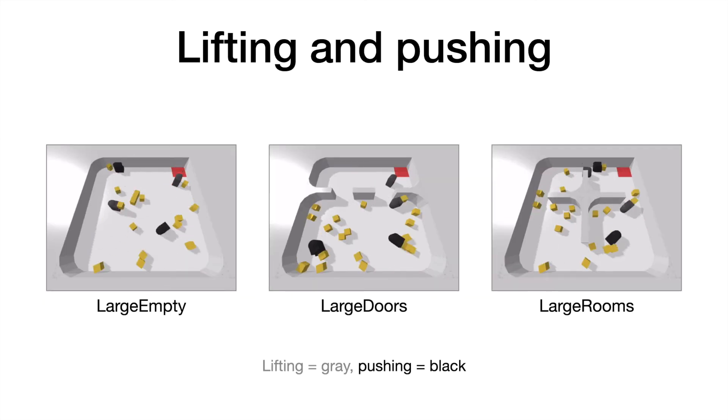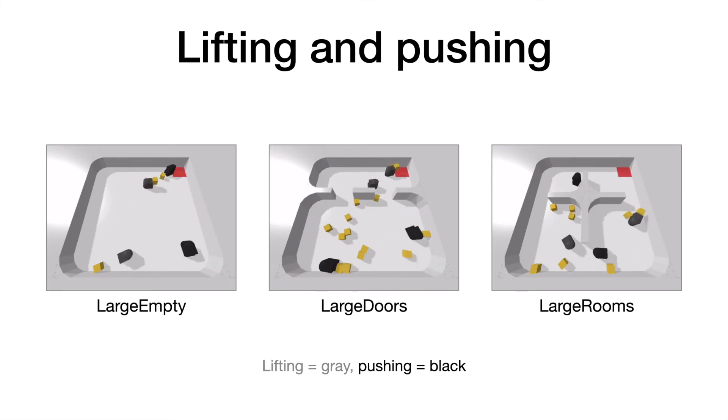We also looked at heterogeneous teams, which are composed of robots that have different capabilities. Here we show a lifting and pushing combination, where the lifters are colored gray and the pushers are colored black. We observe a division of labor that emerges through training. The pushing robots are very effective at pushing objects along the walls, so they learn to focus on the objects that are near the walls. Lifting robots, on the other hand, are generally versatile, so they focus on the rest of the objects.